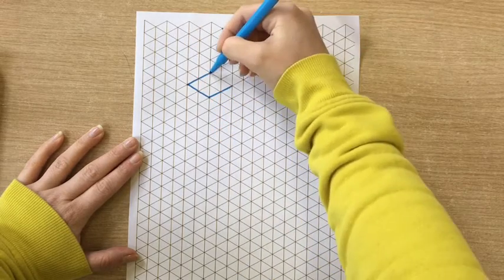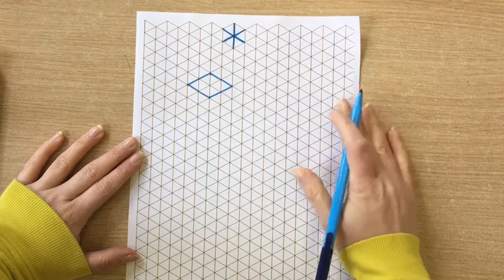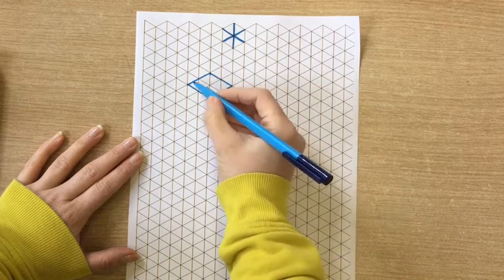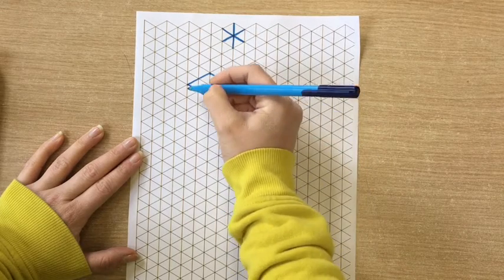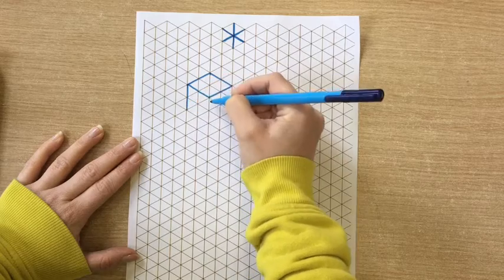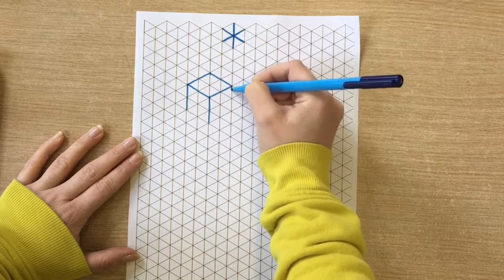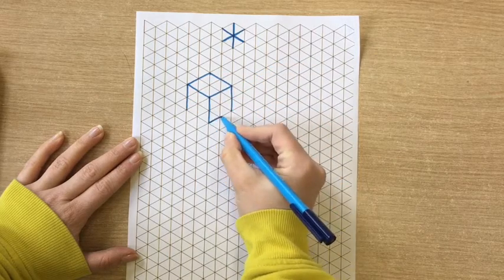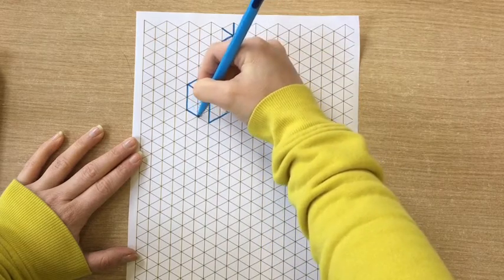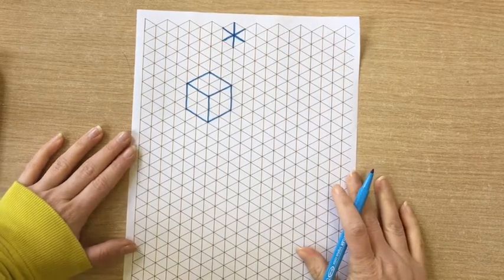You shouldn't draw a line anywhere that there isn't a guide already for you. So this produces the top of our cube. We can then draw the sides coming down and then match those together and that has drawn a cube.